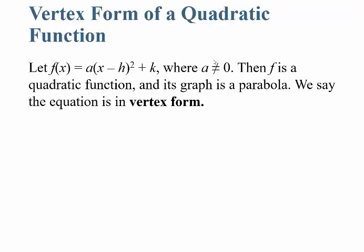First, the vertex form of a quadratic function. Let the function f of x be in this specific form: a times (x minus h), that quantity squared, plus k.